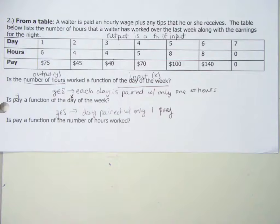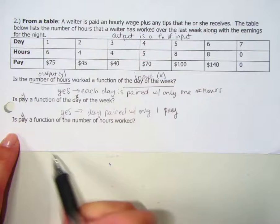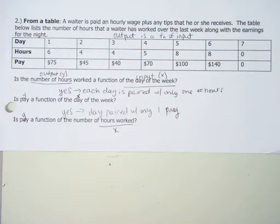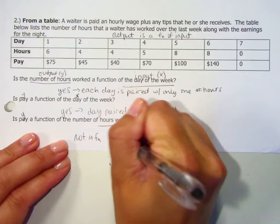Last one. Is pay a function of the number of hours worked? Pay is our output again. A function of the number of hours worked. You're shaking your head up in the front. What's your name? Lizzie. You're shaking your head no. Why? Number of hours is my input. So I'm moving here. I have my input. So as you said, number of hours worked. So because you have one input that's matched with two outputs, this is not a function. We could say four hours paired with 45 and 40.